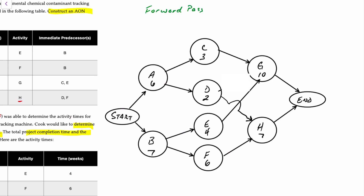Both activities A and B start at time zero. Activity A starts at zero; zero plus six means it will end after six weeks. These are the earliest start and earliest finish — the earliest activity A can start is immediately, but the earliest it can finish is in six weeks. Activity B can also start immediately, and adding the seven weeks it takes, the earliest it can finish is in seven weeks. So again: earliest start, earliest finish.